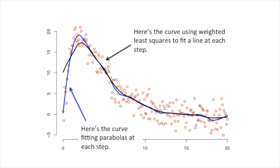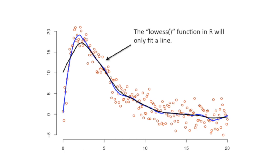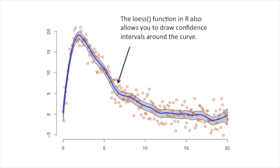Before you do your fit, make sure you look at the original data to decide which you think would be better. The lowess function in R will only fit a line, and the loess function in R can fit a line or a parabola. However, note that the default for loess is to fit a parabola. So even though these two functions implement the same algorithm, they have different default settings. The loess function in R also allows you to draw confidence intervals around the curve.